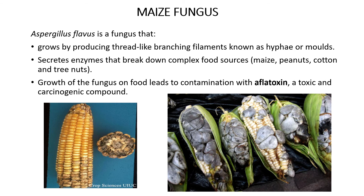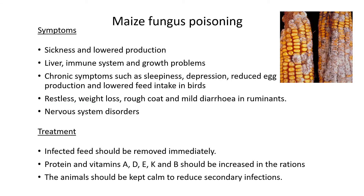For maize fungus poisoning, symptoms include lower production, liver and immune system problems, and growth problems — generally any signs that the animal is showing ill health. Chronic symptoms include sleepiness, depression, and in chickens reduced egg production and lowered feed intake. Animals are generally restless, show weight loss, sometimes have a rough coat and mild diarrhea, specifically in ruminants. They can also show nervous system disorders, meaning they struggle to move or act differently, seemingly because they can't use their limbs as usual.